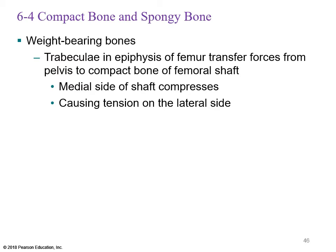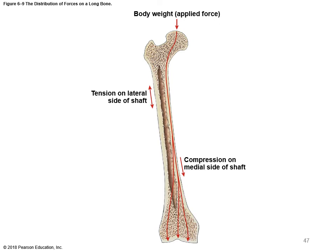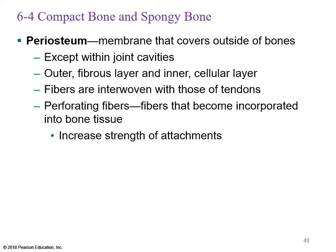Wherever there is weight bearing, the trabeculae will be thickened — for example at the epiphysis of the femur, where forces are transferred to the pelvis. The medial side of the shaft experiences compression while the lateral side experiences tension. Perforating (Sharpey's) fibers become incorporated into bone tissue, helping tendons insert into bone and increasing the strength of those attachments.